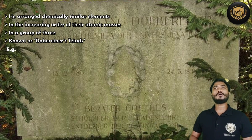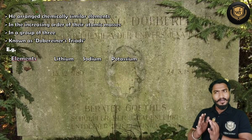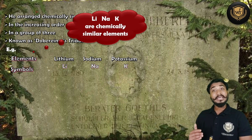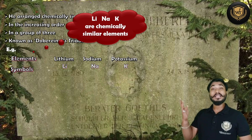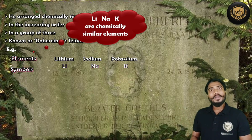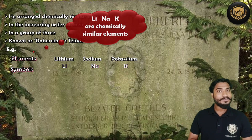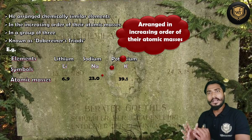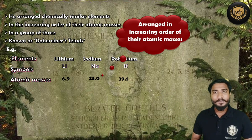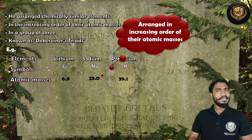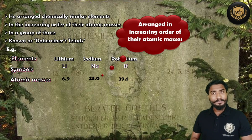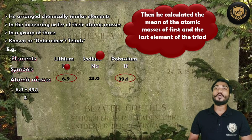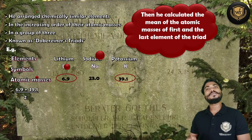On the screen you can observe a group of three elements: lithium, sodium, and potassium. These three elements are chemically similar — their chemical properties are similar; they are all metals with one electron in their outermost shell. They are arranged in increasing order of their atomic masses: lithium is 6.9, sodium is 23, and potassium is 39.1. Dobereiner observed these three numbers and came to a conclusion: when he calculated the average of the first and last element's atomic mass, it was equal to the mass of the middle element.